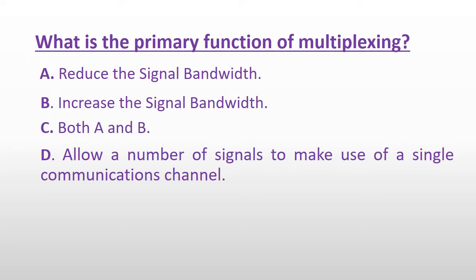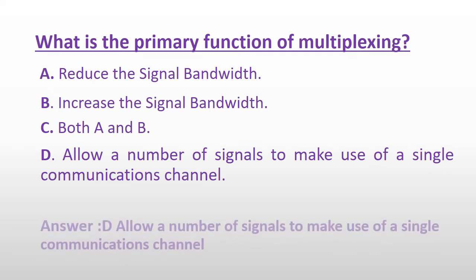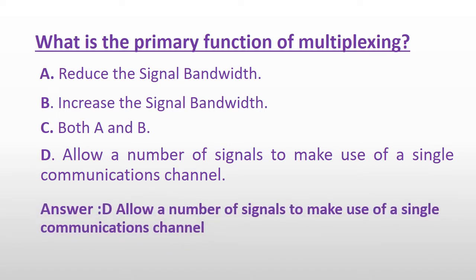What is the primary function of multiplexing? Option A: Reduce the signal bandwidth. Option B: Increase the signal bandwidth. Option C: Both A and B. Or Option D: Allow a number of signals to make use of a single communication channel. And the answer is Option D: Allow a number of signals to make use of a single communication channel.